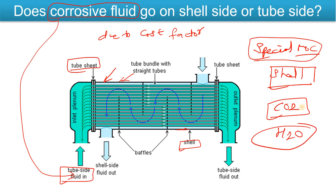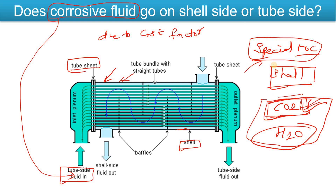If you look at the configuration, it might seem it should go in the shell side, but it goes in the tube side because of this cost factor. In advancements of heat exchanger design and fluid allocation, I have seen it also go in the shell side — just with a changed MOC — but the tube side preference is the major factor we see in industry. I hope you understood this concept. Thanks for watching. Keep learning!